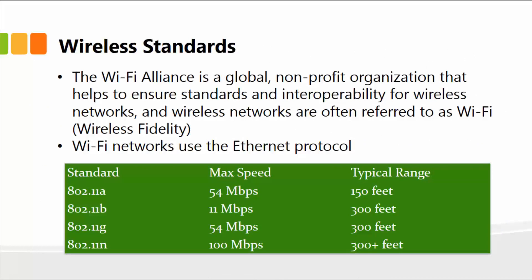The last topic is wireless standards. The Wi-Fi Alliance is a global nonprofit organization that helps ensure standards and interoperability for wireless networks. Wireless networks are often referred to as Wi-Fi, which stands for Wireless Fidelity. Wi-Fi networks use the 802 protocol. The standard 802.11a has a maximum data transfer speed of 54 megabits per second with a typical range of 150 feet. The 802.11b standard has 11 MIPS with 300 feet range. Just know these wireless standards as well.